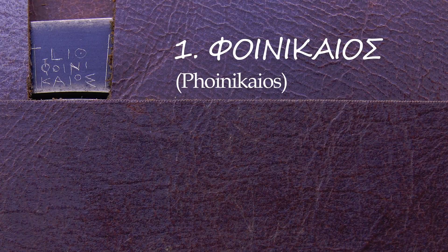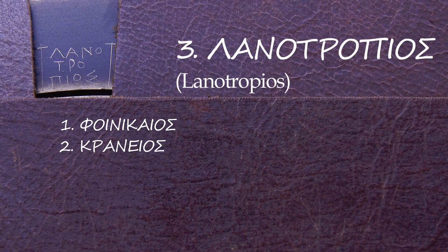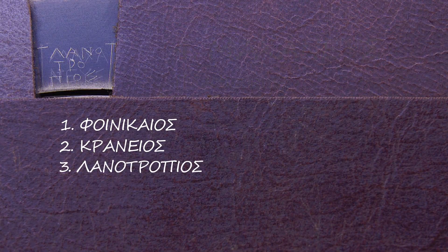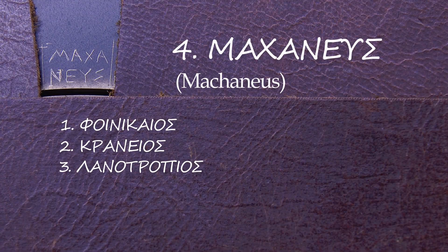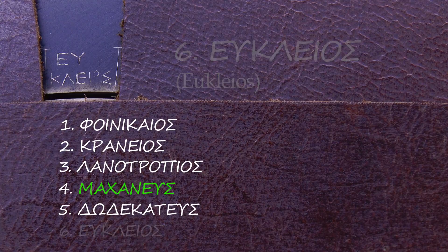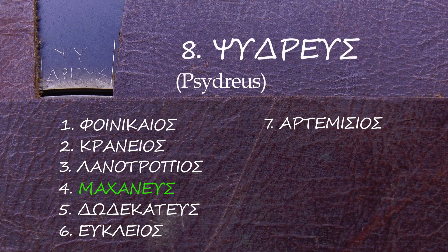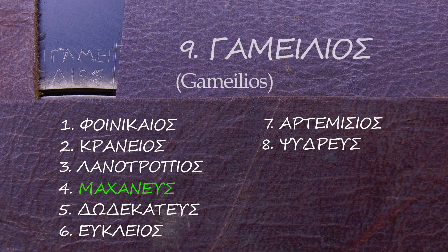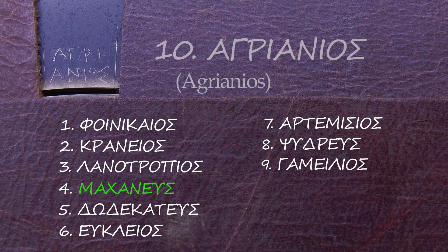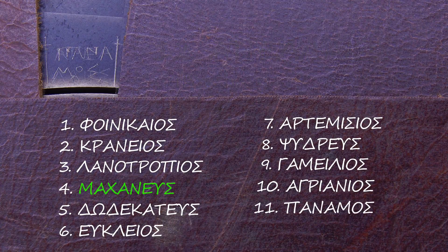Ok, so the month names in sequence are Phoinikaios, Kraneios, Lanotropios, Machaneus, the month now understood to be the intercalary month. Dodekateus, Eukleios, Artemisios, Psydreus, Gameilios, Agrianios, Panamos, and finally Apellaios.